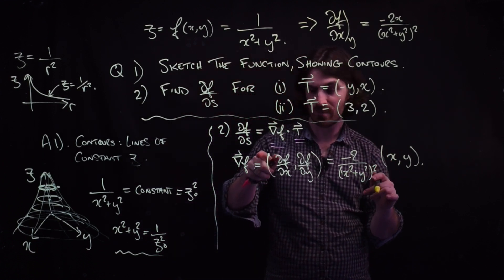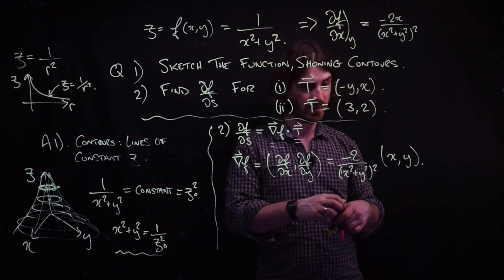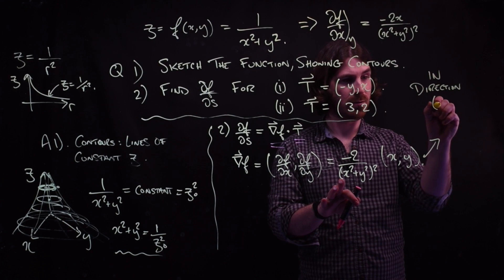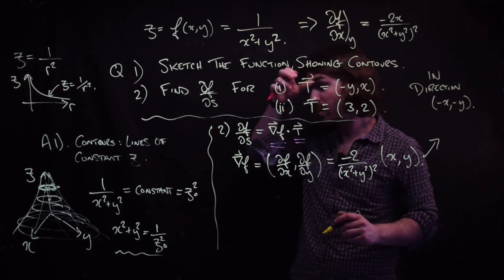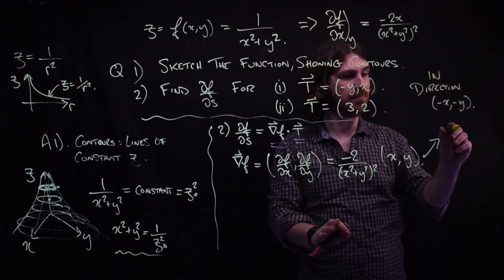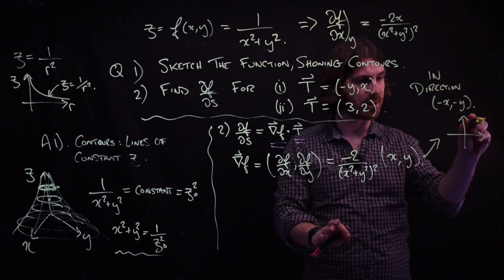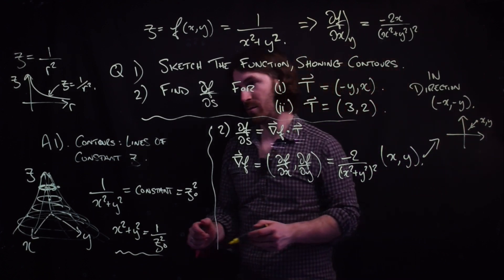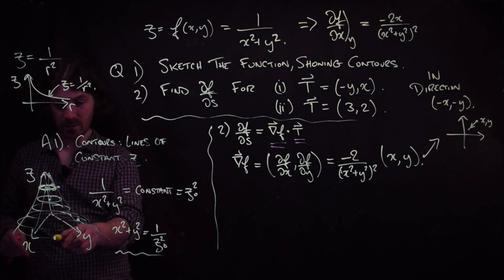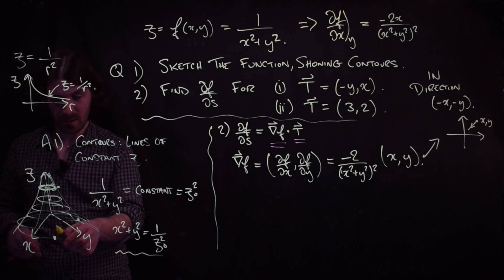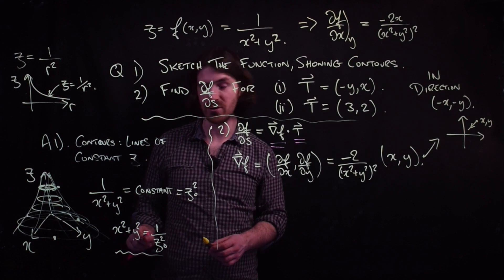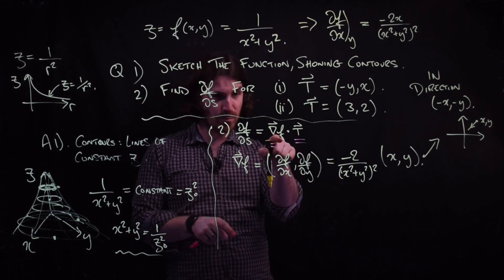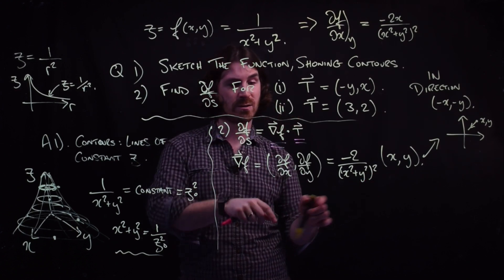This is the gradient of f. What does it represent? It represents the direction in which the function changes fastest. This thing is in the direction of minus x, minus y. Is that consistent with our drawing? If we look at the x-y plane, for a point x, y, we're saying the function changes fastest in the direction that points towards the origin. This circus tent shape is such that pointing towards the origin is the direction of fastest change.